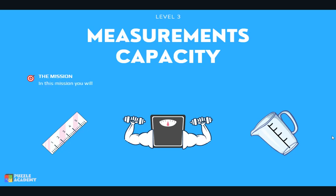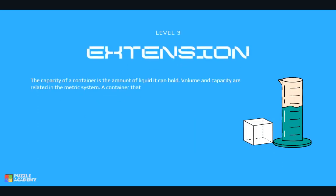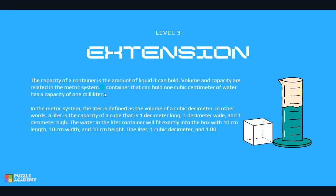As we continue our discussion about measurements of capacity and volume, in this lesson we will be able to convert capacity measurements from one unit to another and solve problems involving capacity. The capacity of a container is the amount of liquid it can hold. Volume and capacity are related in the metric system — a container that can hold 1 cubic centimeter of water has a capacity of 1 milliliter.